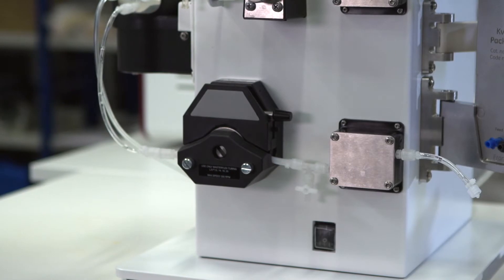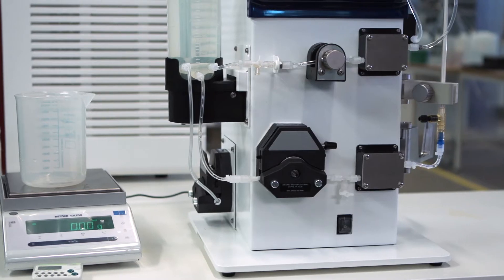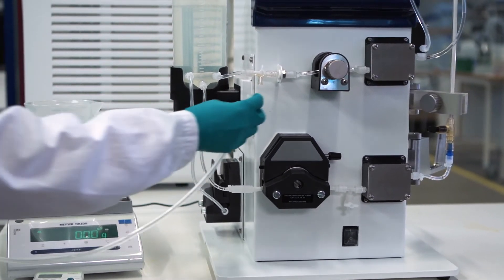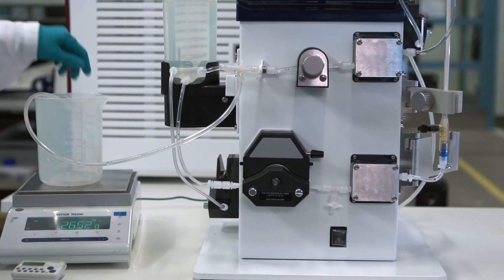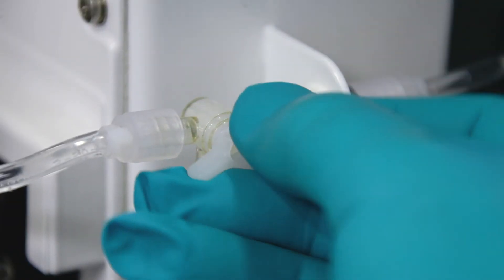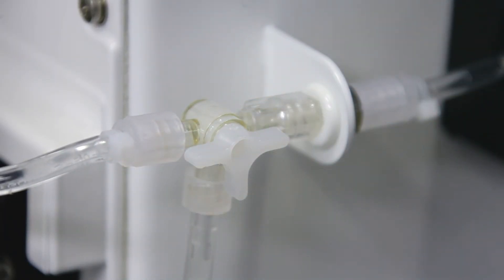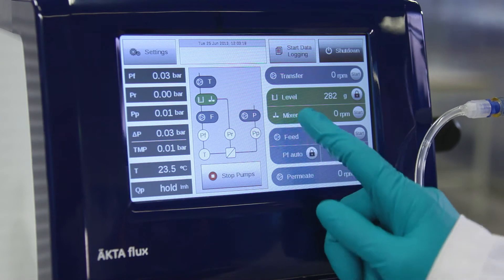To calibrate the feed pump for accurate display and control of the flow rate, place tubing in a beaker on a scale. Attach tubing to the upper drain valve outlet, open the outlet, and set the feed pump to a low speed.